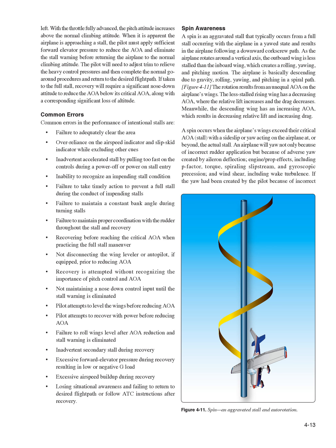A spin is an aggravated stall that typically occurs from a full stall occurring with the airplane in a yawed state, and results in the airplane following a downward corkscrew path. As the airplane rotates around a vertical axis, the outboard wing is less stalled than the inboard wing, creating a rolling, yawing, and pitching motion. The rotation results from an unequal AOA on the airplane's wings: the less-stalled rising wing has decreasing AOA where relative lift increases and drag decreases, while the descending wing has increasing AOA resulting in decreasing lift and increasing drag. A spin occurs when the airplane's wings exceed their critical AOA with a sideslip or yaw acting on the airplane at or beyond the actual stall. An airplane will yaw not only because of incorrect rudder application but also because of adverse yaw from aileron deflection, engine/prop effects including P-factor, torque, spiraling slipstream, gyroscopic precession, and wind shear including wake turbulence.